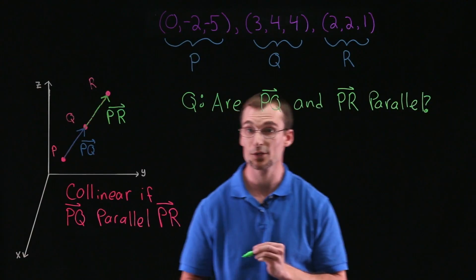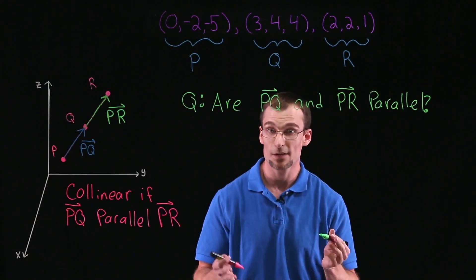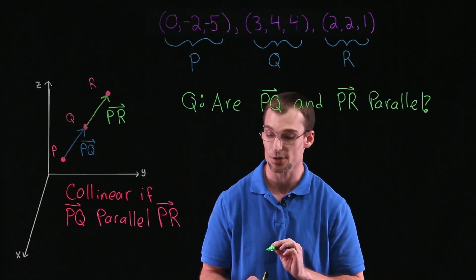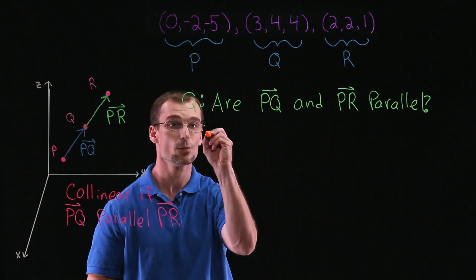If they are parallel, that tells us the points are collinear. So we've done things like this before, given two vectors, finding whether they're parallel. First, we have to find the vectors. So our vectors, let's start with PQ.